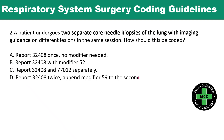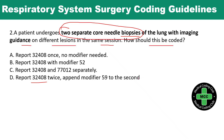Next, second question: a patient undergoes two separate core needle biopsies of the lung with image guidance on different lesions in the same session. How should this be coded? You already know that core needle biopsy includes image guidance, but here they are performing two separate biopsies. For this reason, you code CPT 32408 twice, and for the second line item you append modifier 59. Option D is correct: since two separate lesions are biopsied, report 32408 again with modifier 59.